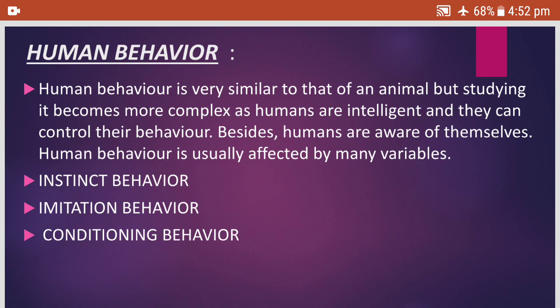Human behavior is very similar to that of an animal, but studying it becomes more complex as humans are intelligent and they can control their behaviors. Besides, humans are aware of themselves. Human behavior is usually affected by many variables. Human behavior is of three types.